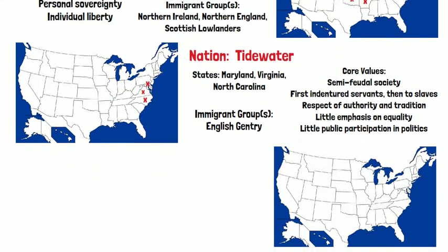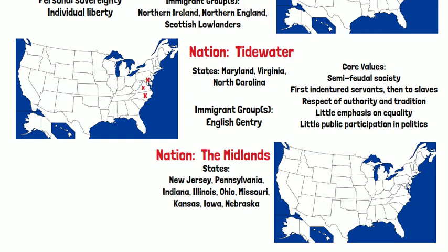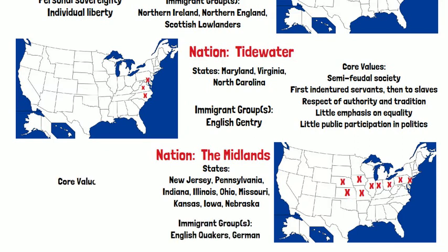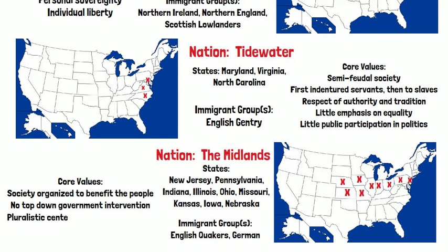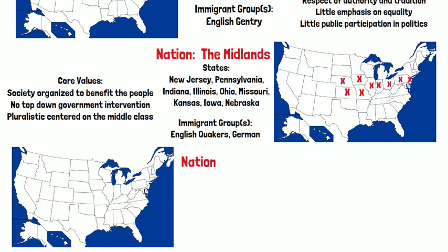The next nation is the Midlands. This was settled by English Quakers and Germans. The states include New Jersey, Pennsylvania, Indiana, Illinois, Ohio, Missouri, Kansas, Iowa, and Nebraska. Their core values hold that society is organized to benefit the people. There is no top-down government intervention, and it is pluralistic, centered on the middle class.